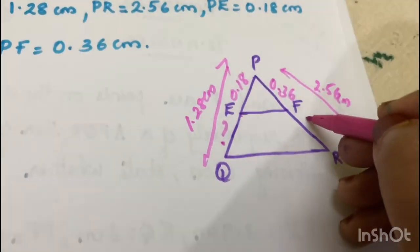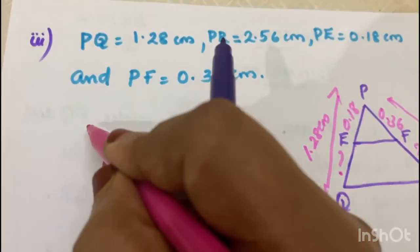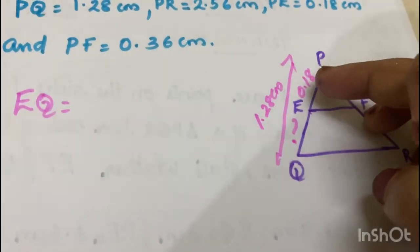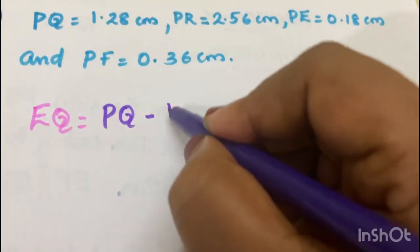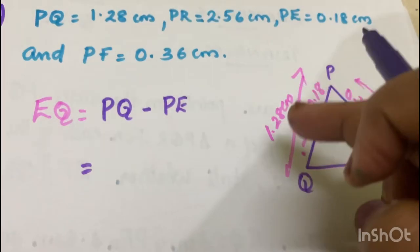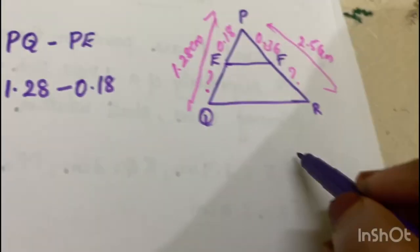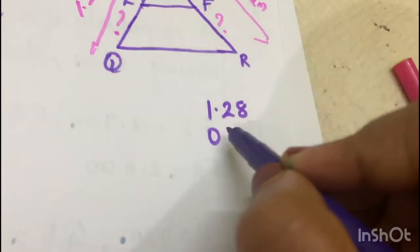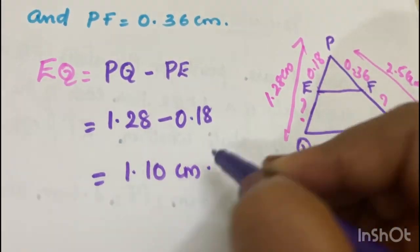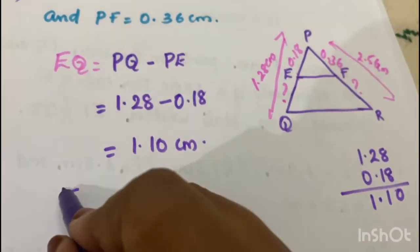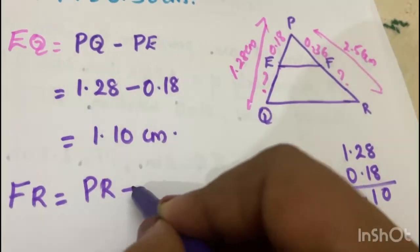We need the values of EQ and FR. EQ equals PQ minus PE, so EQ equals 1.28 minus 0.18, which equals 1.10 cm. Now we find FR: FR equals PR minus PF.